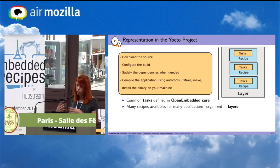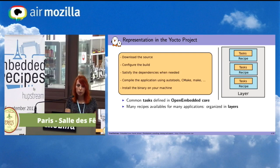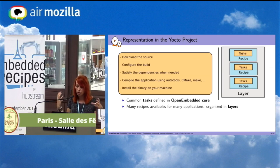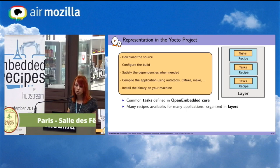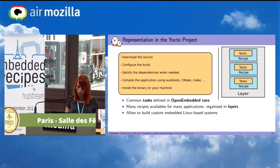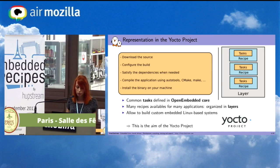In your final image, you will have several applications, and as a .bb file compiles an application, you will have several .bb files. All these .bb files are organized in what we call a layer. A layer — you can see it as a folder — contains several .bb files. All this allows you to build a custom embedded Linux-based system, which is the aim of the Yocto project.